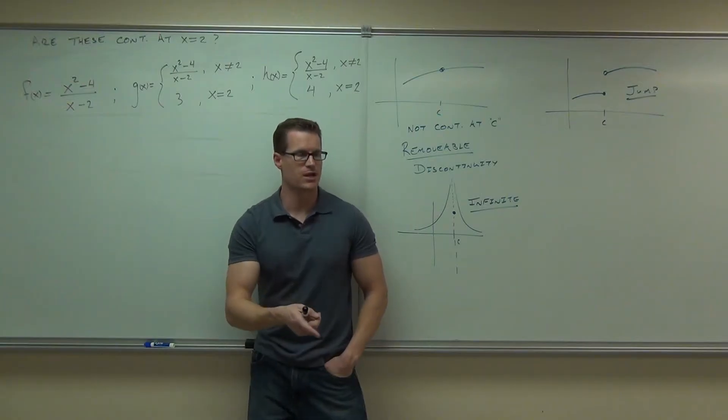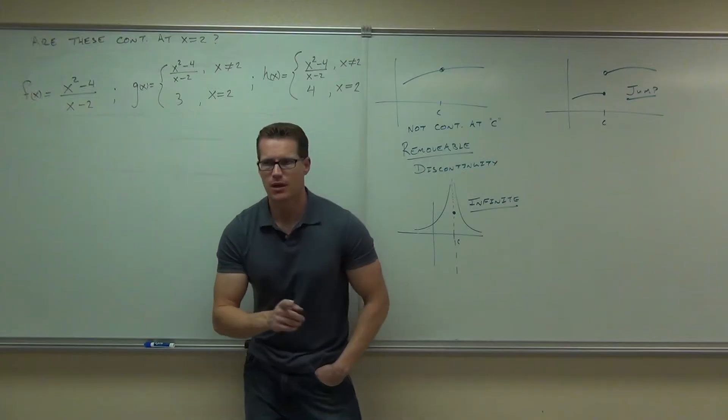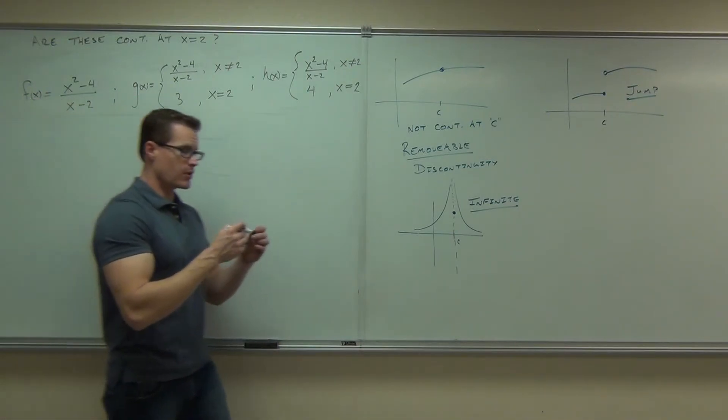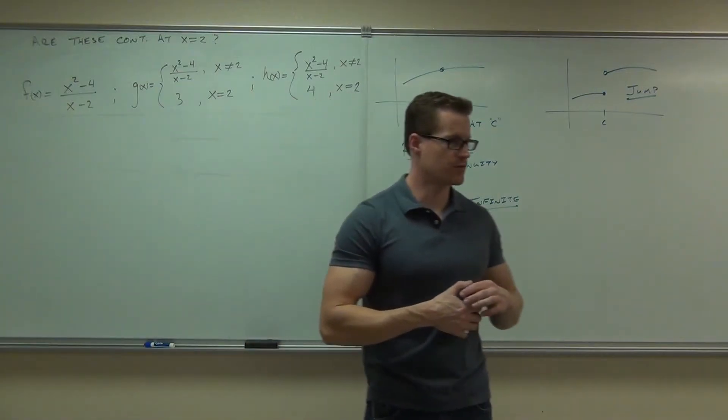So that would fail. This is not continuous. In fact, if you remember, I think we've had this problem or one very similar to it. What this is, by the way, can you determine whether that's a hole or an asymptote? Could you figure that out?